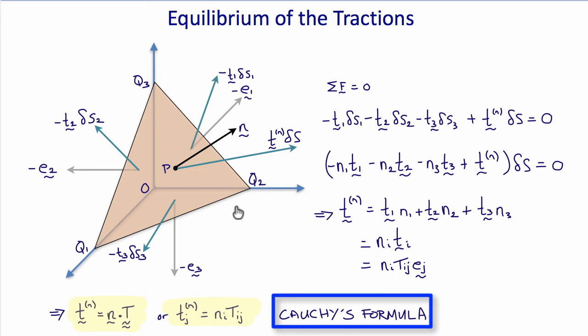And Cauchy's formula states that the traction vector t is equal to n times the stress tensor T. Or in component notation, the j-th component of the traction equals the i-th component of the unit normal times t i j, which shows that the stress tensor t i j, its first index is the index referring to the surface, and its second index is the index referring to the component of the traction.